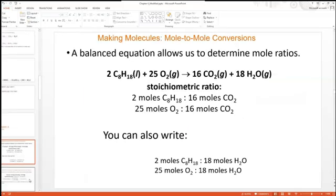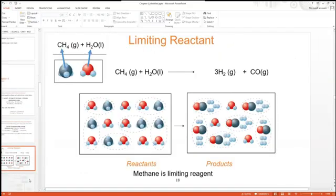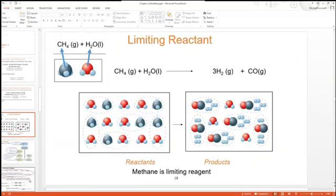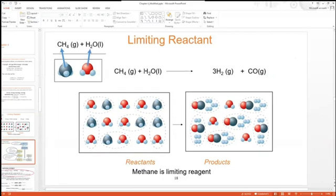Another key concept is limiting reagent. In a balanced reaction, we know the stoichiometric ratios, which are the ratios of the moles, but we can figure out what is limiting. Meaning if we have both reactants, we can figure out which reactant will run out first. Whichever one runs out first determines the extent of the reaction.